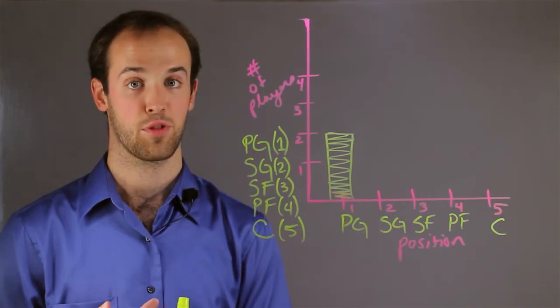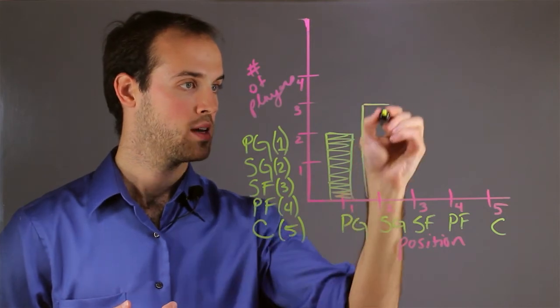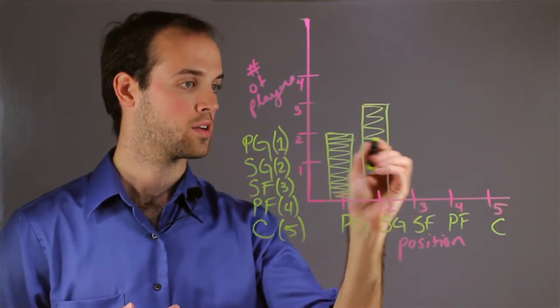Same thing for shooting guards. Let's say I have 3 of those. So, I just come straight up to 3, draw my bar, and color it in.